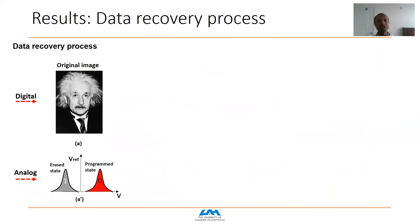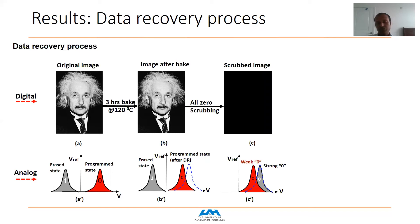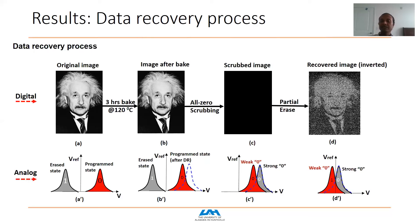We demonstrate data recovery by writing an Einstein image as representative data. After baking the image for three hours to accelerate data retention effects, the digital representation remains unchanged, but the analog threshold voltage has drifted down. We then perform all-zero scrubbing to delete the image — the image appears completely black. After applying partial erase, the Einstein image is recovered, demonstrating data recovery from real flash chips even after all-zero-based sanitization.